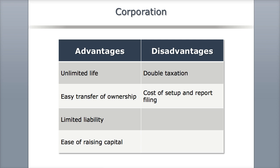Some disadvantages of corporations include double taxation — the corporation gets taxed on their earnings, and when they pass income through to investors as dividends, investors also pay tax on those dividends. It's also much more expensive to set up, with costs of setup, reporting, and filing. This is especially true for public corporations, which have the most expenses as they must satisfy SEC regulations and additional paperwork related to public shares of stock.